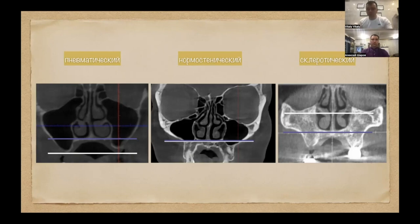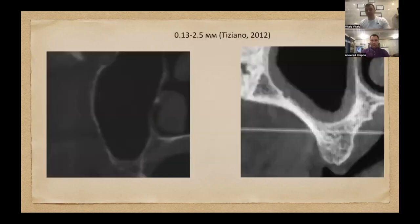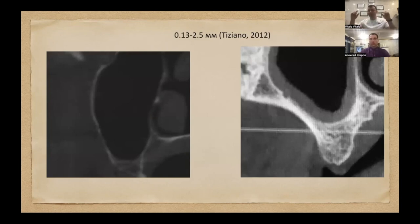Вот такая корреляция. Развивая эту тему, мы говорим, что крайние формы — пациенты астенического телосложения — это толщина мембраны Шнайдера 0,13 мм, и в сторону гиперстенического — до 2,5 мм. То есть двадцатикратная вариабельная норма. Я не знаю таких показателей в организме, отличающихся в 20 раз.